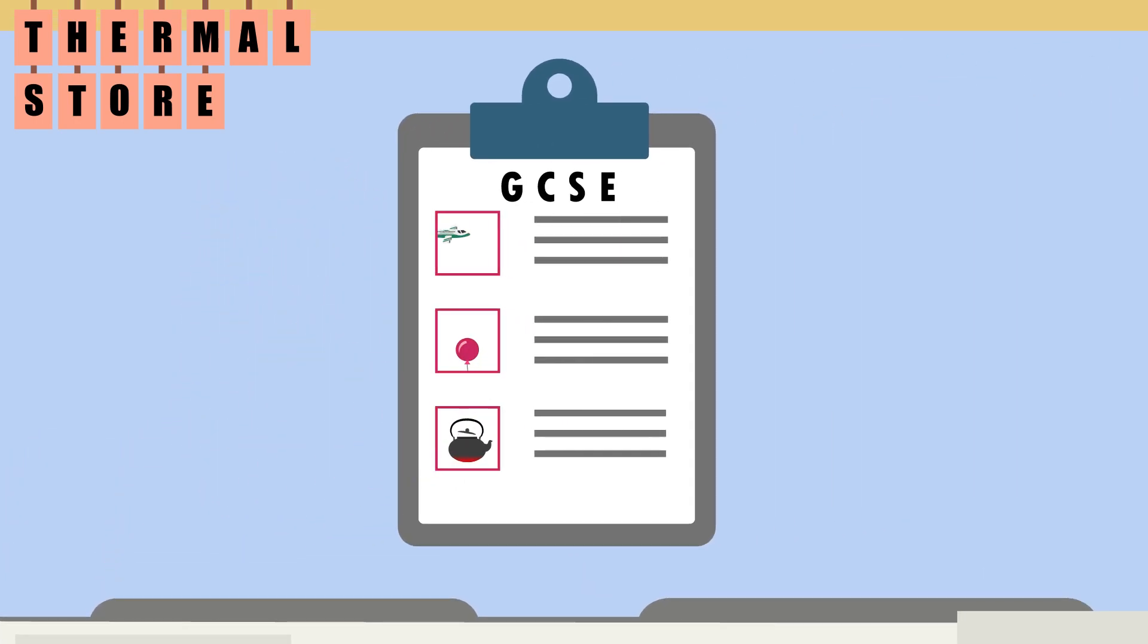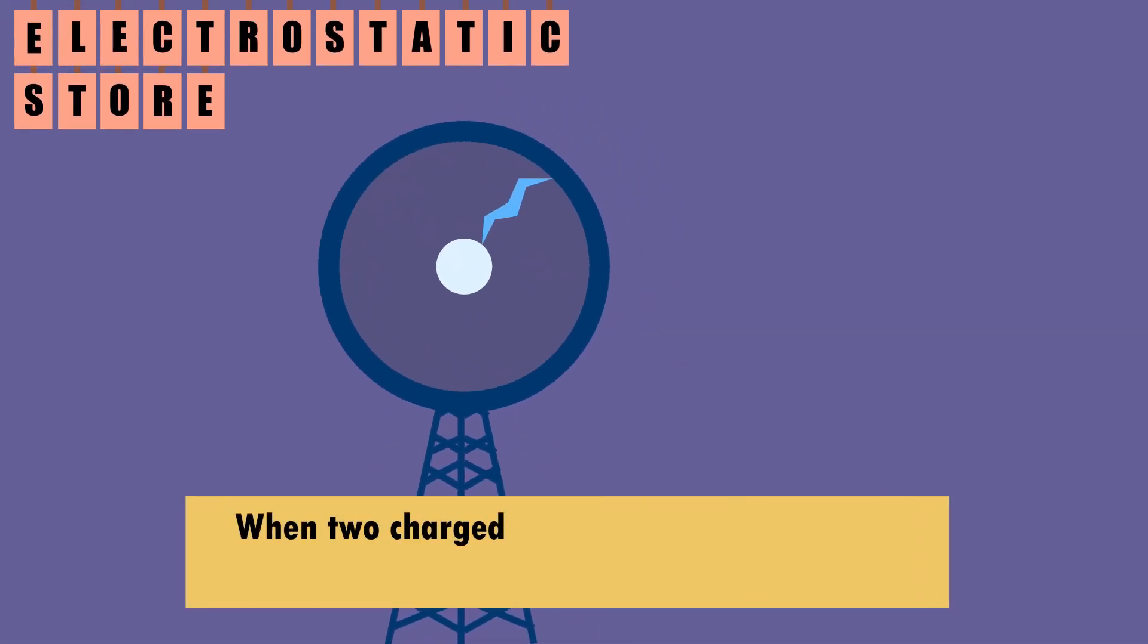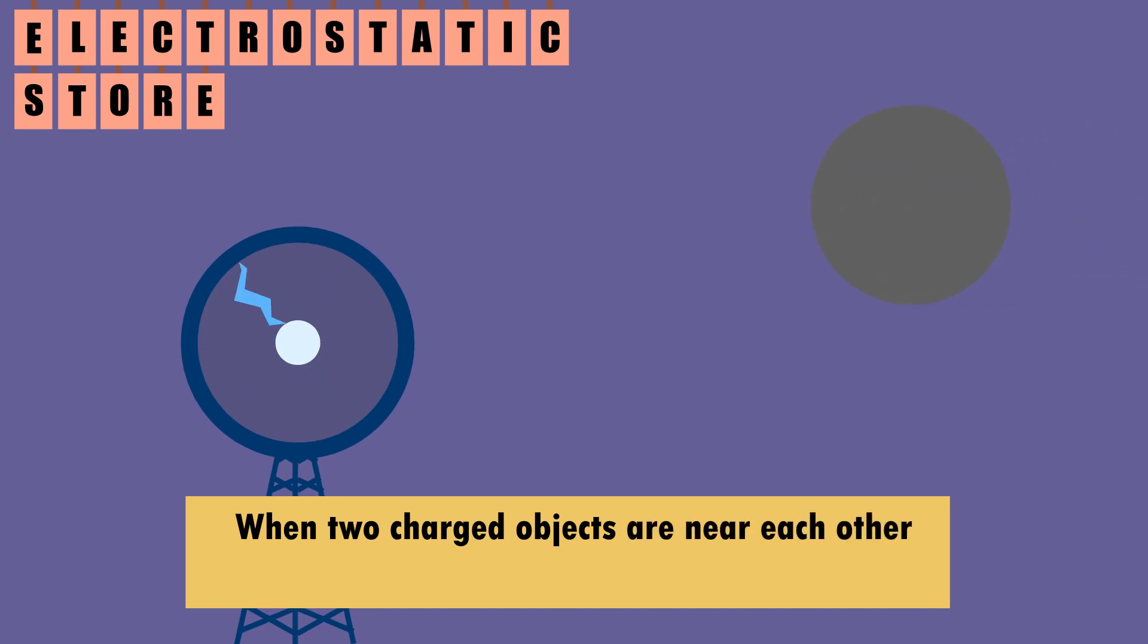The last three are asked about a lot less, but it's still good to know them. We have the electrostatic store. When two charged objects are held near each other, but apart from each other, there'll be an electrostatic store.